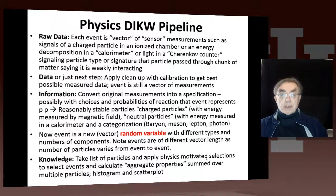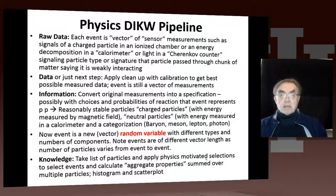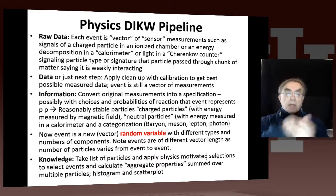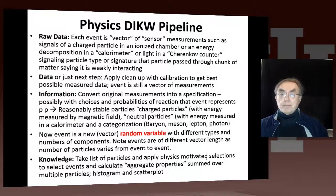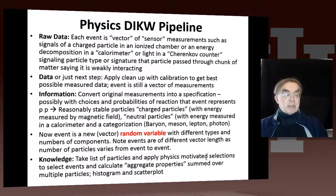Let's actually do this data-information-knowledge-wisdom pipeline. As we discussed in the previous lesson, each event is a vector of sensor measurements, such as the signals of the charged particle in an ionization chamber, or the energy deposited when a photon hits a bunch of lead — those are called calorimeters — or the light in a Cherenkov counter, which measures the type of the particle, because the light produced when you go through a Cherenkov counter depends on the mass of the particle for a given momentum.